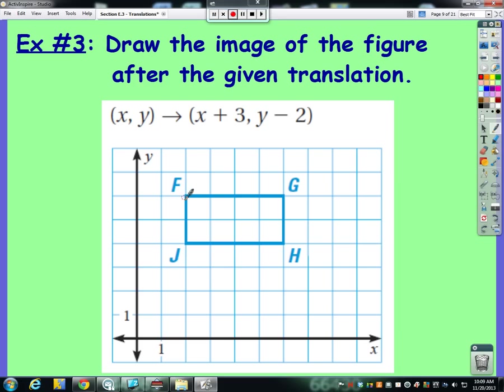So let's just start with f. Let's figure out where f prime is going to be. So f is saying it's going to move plus three, which means left or right. That means right. And then the y is going to be minus two. So that's up or down. Since it's negative, it's going to go down. So for every one of these points, I'm going to go right three and down two. So right one, two, three, down two. There is f prime. Same thing for g. Right three, down two. And there's g prime.